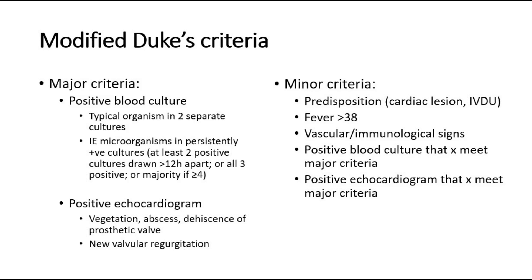A positive echocardiogram means we see vegetation, abscess, or dehiscence of a prosthetic valve, or new valvular regurgitation. For minor criteria: the first is predisposition — the patient having risk factors like cardiac lesion or being an IV drug user. Fever more than 38 degrees. Vascular or immunological signs. Positive blood culture or positive echocardiogram that does not meet the major criteria.